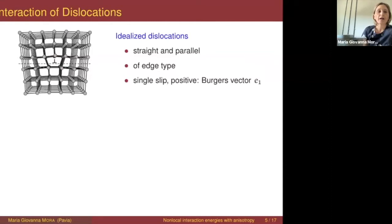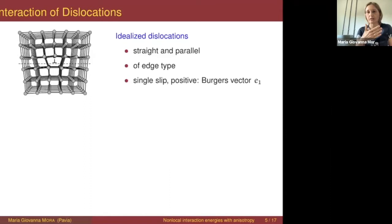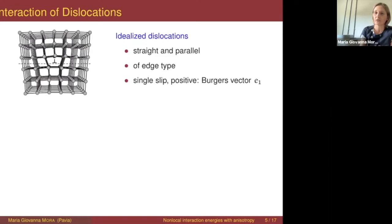If we assume that all defects are straight and parallel lines, then we can describe the behavior of these defects in a two-dimensional setting. We take a two-dimensional section of the crystal, and in this section we identify each dislocation line with its intersection — a point. Because of these geometrical assumptions, we can now describe these locations as interacting points in a two-dimensional domain.